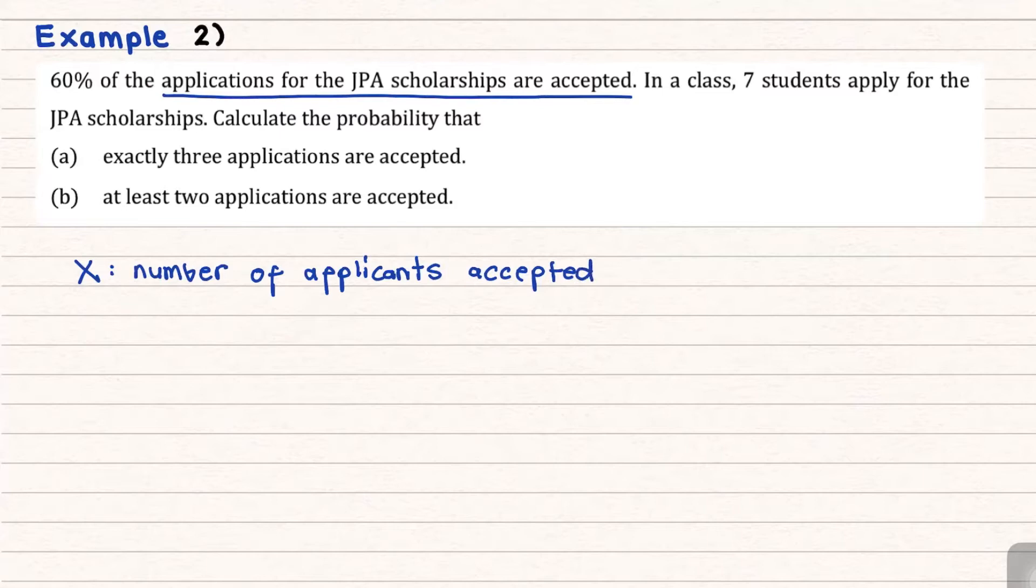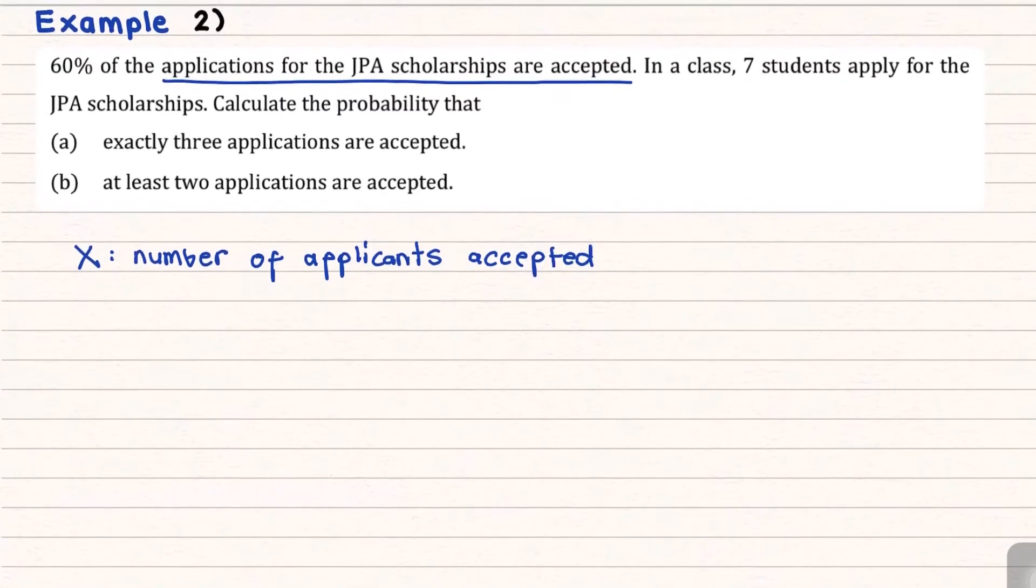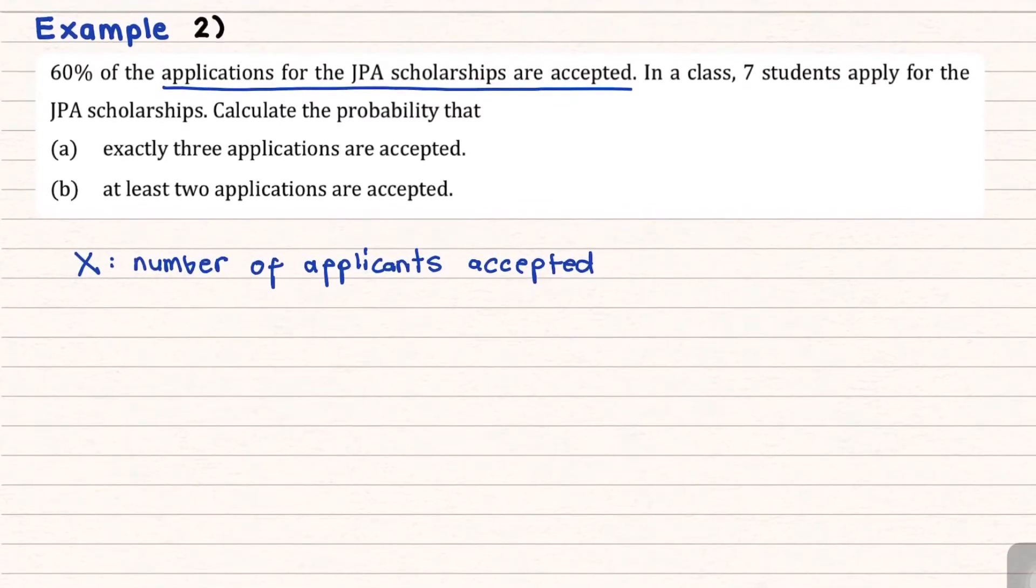Okay, then write down the notation of your binomial distribution. So X having a binomial distribution. Now, how many number of trials? Over here, they say that in a class of 7 students apply for the JPA. So you have a class of 7, means that is your number of trials, N. So this is N equivalent to 7.